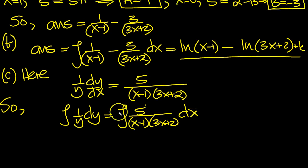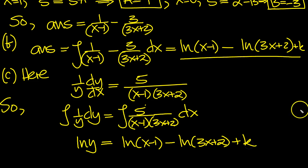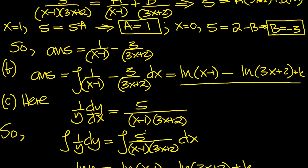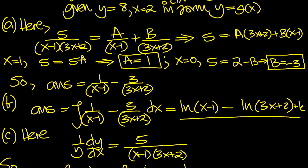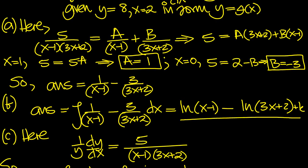So what do we get here then? On the left, we'll get log y. On the right, we'll just get what we've done above. So we can put that in now, because we've done that work. Log x minus 1 minus log 3x plus 2 plus k. Now we had initial conditions. I'll just remind ourselves of what they were. y equals 8 when x equals 2.